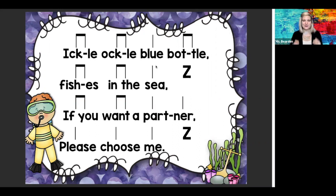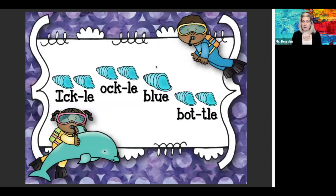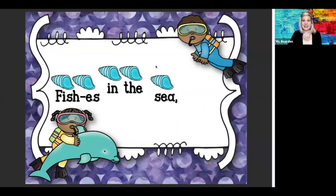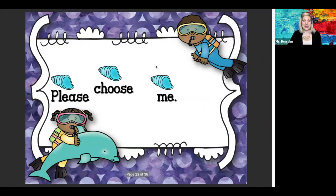We're going to switch gears to our melody. Melody is when it goes up and down to make the song. It says follow the melody. This time I don't have to clap anymore — we're just going to go back to singing our song and follow how the shells go up and down, and make your voice go up and down. Here we go. Ickle, ackle, blue bottle, fish is in the sea. Shh. If you want a partner, please choose me. Shh. Very good — did you follow the shells?